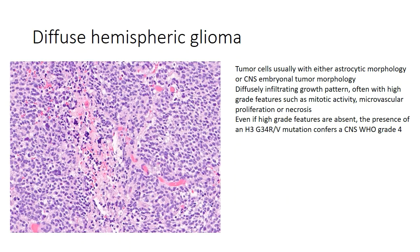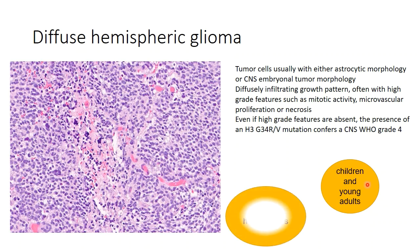Diffuse hemispheric glioma characteristically affects the cerebral hemispheres and occurs typically in children and young adults. This tumor shows characteristic high-grade morphology with high-grade nuclear features or CNS embryonal tumor-like morphology. There is high mitotic activity; microvascular proliferation and/or necrosis may be present. Even if these features are lacking, a characteristic H3-G34RV mutation upgrades the tumor to a CNS-WHO grade 4 glioma, irrespective of morphology.